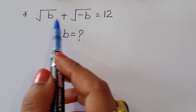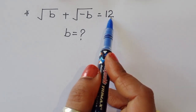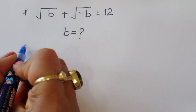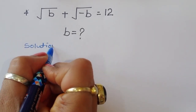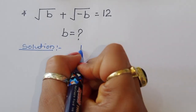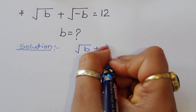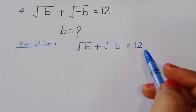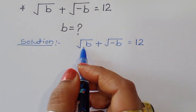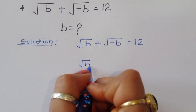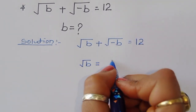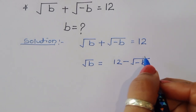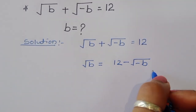The question is: given √b + √(-b) = 12, we have to find the value of b. We can rearrange this — √b = 12 minus √(-b).